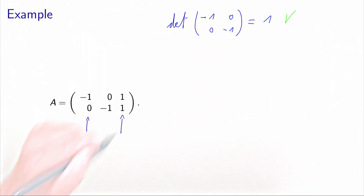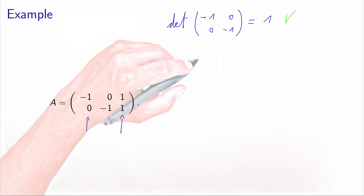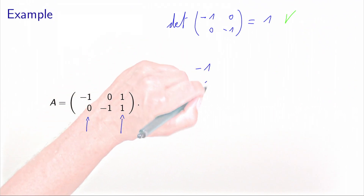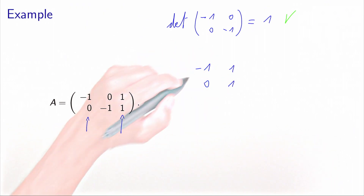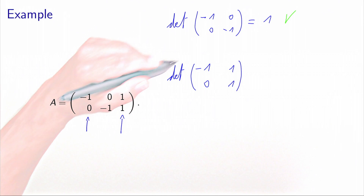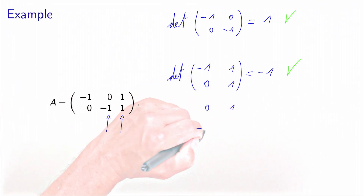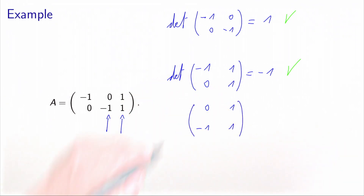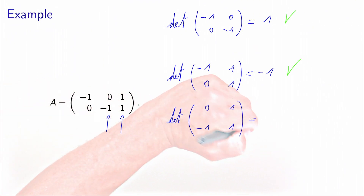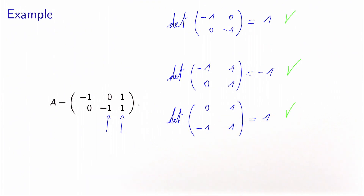Now we select columns 1 and 3, obtaining the matrix [−1, 0; 1, 1], and the determinant is equal to minus 1, which is also okay. The last submatrix involves the last two columns, giving [0, 1; −1, 1], and the determinant is equal to 1. Therefore, matrix A is totally unimodular, as each square submatrix has a determinant which is 0, 1, or minus 1.